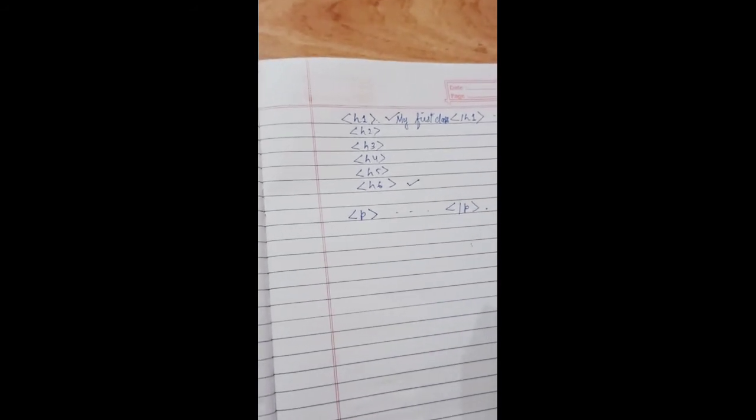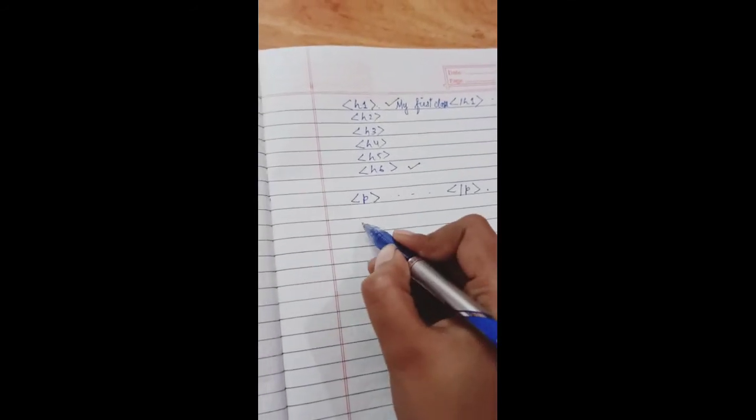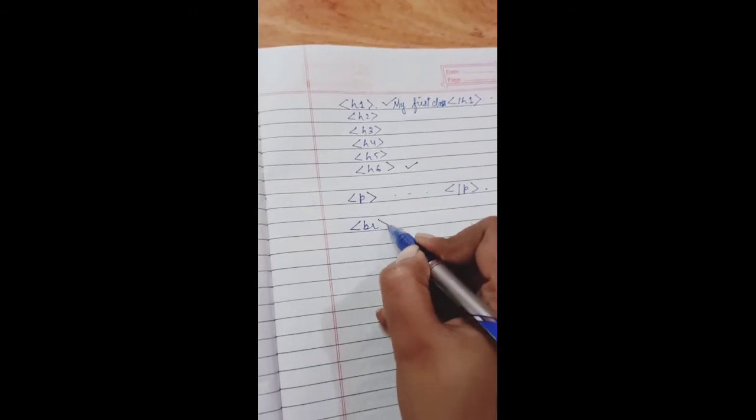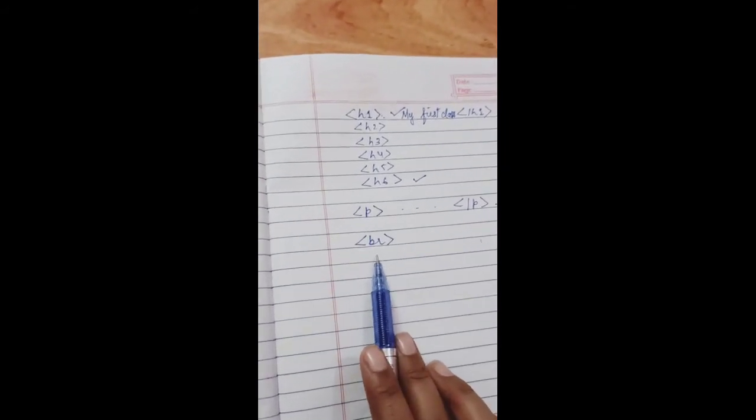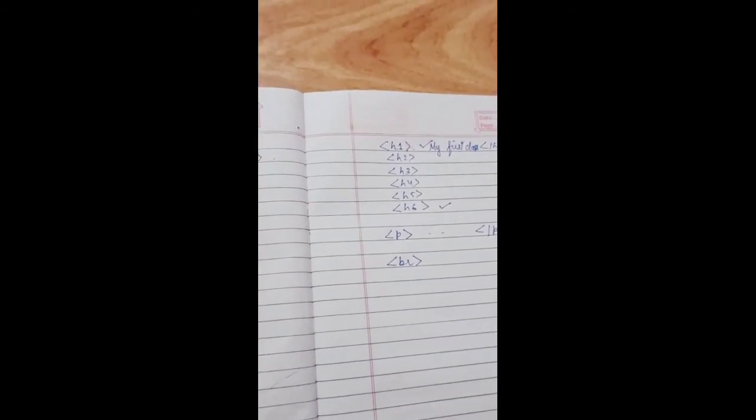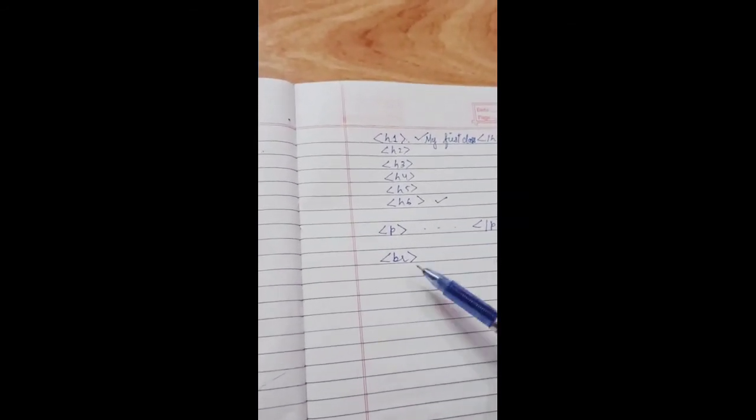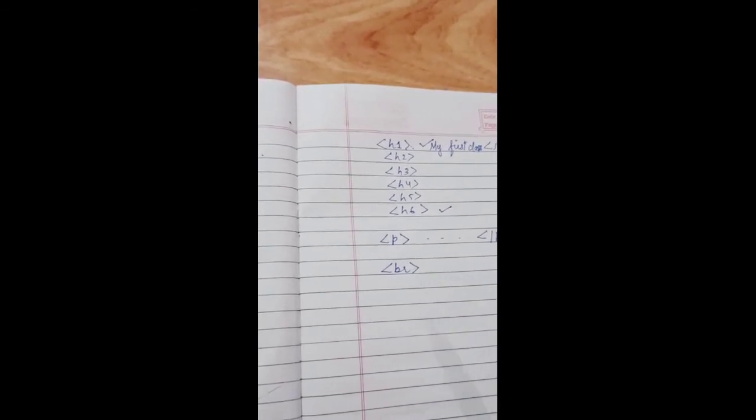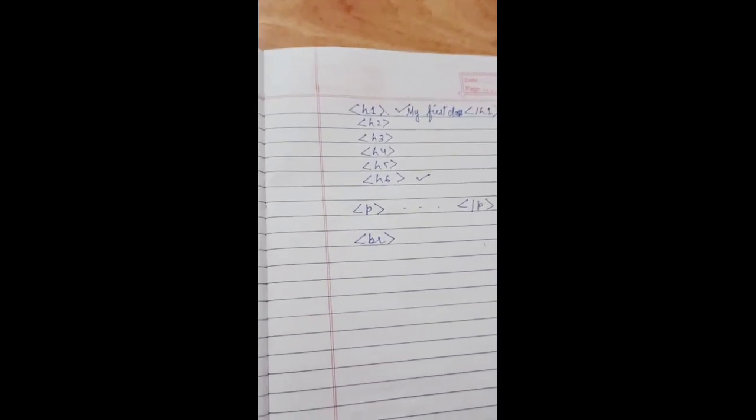Then another tag is line break tag, which is written as small BR. This is a line break tag and it is used when we want to start a new line. It is used when we want to start a new line but do not want to start a new paragraph.